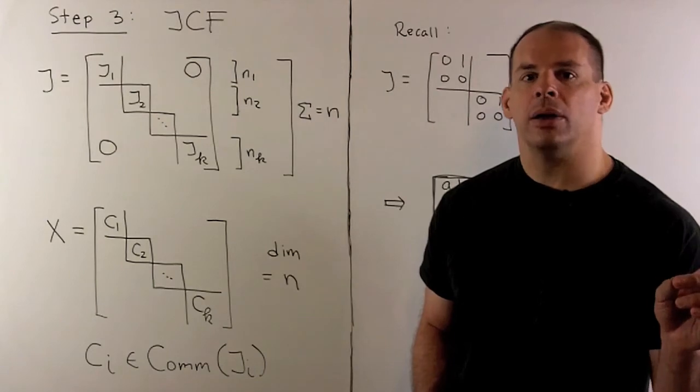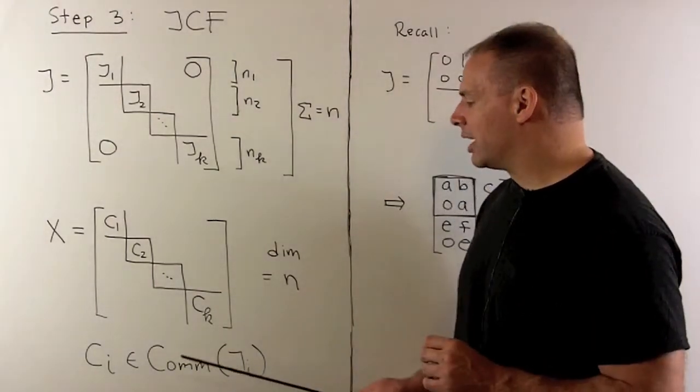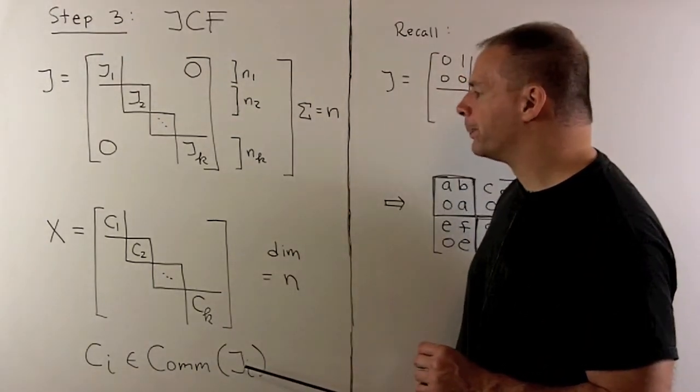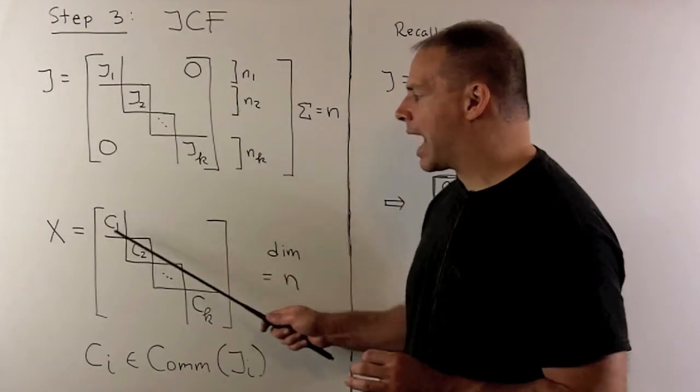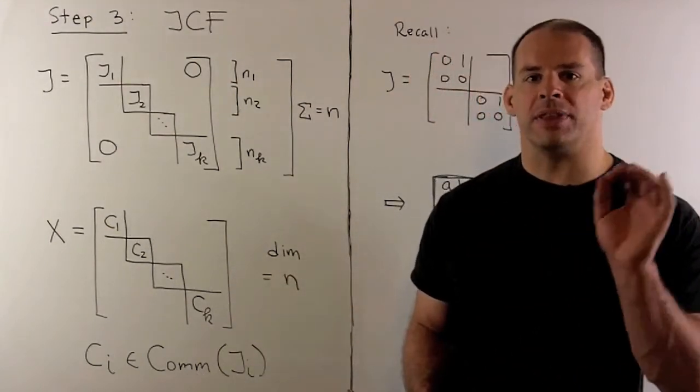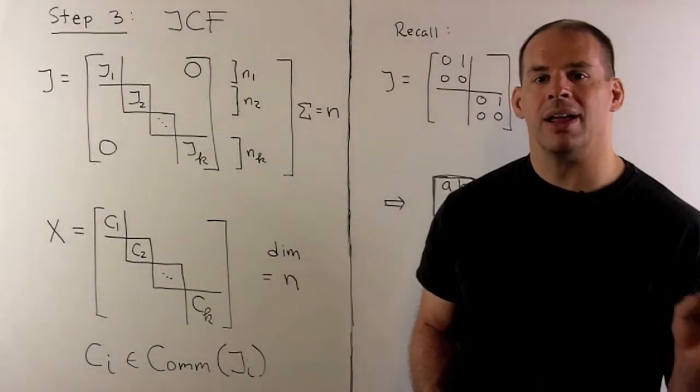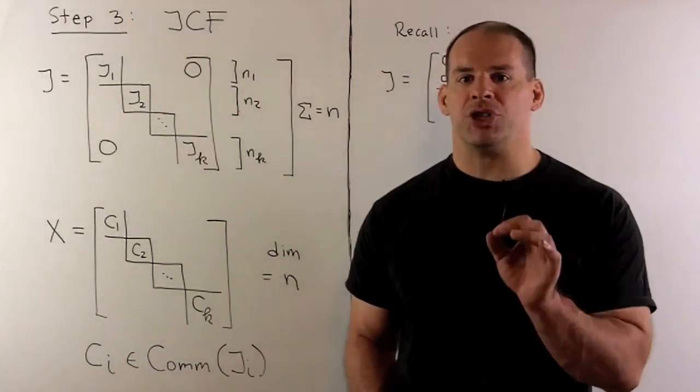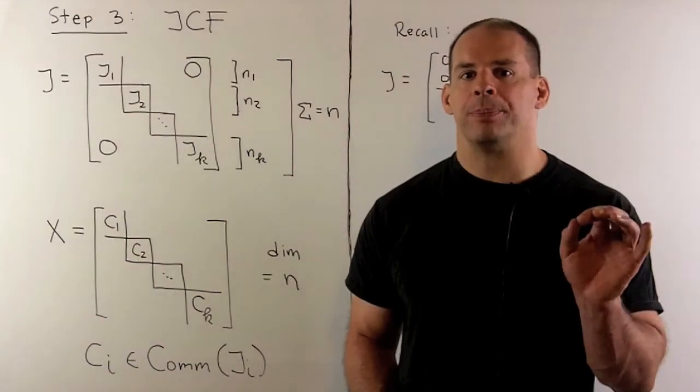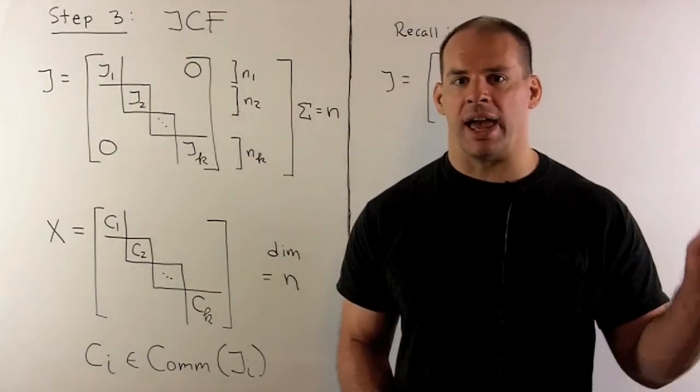If we take the subspace of all such matrices in the commutant of J, that subspace has dimension N. So to see that, we know that the dimension of each commutant of J sub I is equal to the size of the block. So if I take the sum of the sizes of the blocks, we get the size of J, which is N. That's our result. The dimension of the commutant of J is greater than or equal to N.